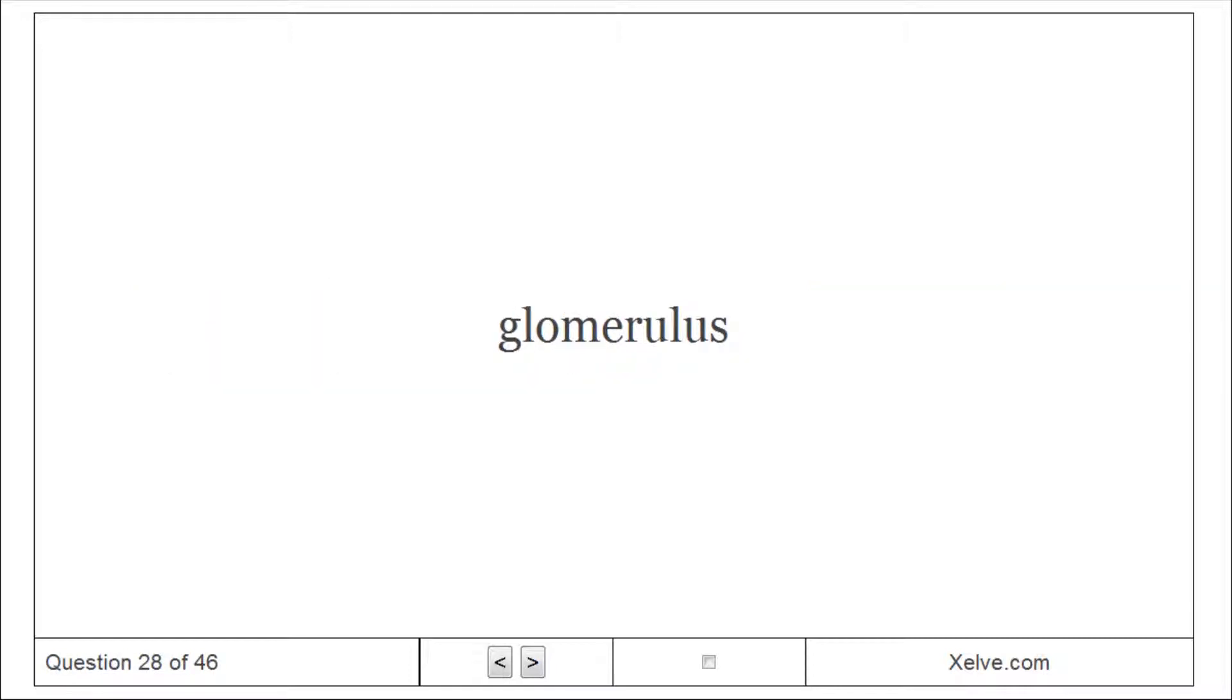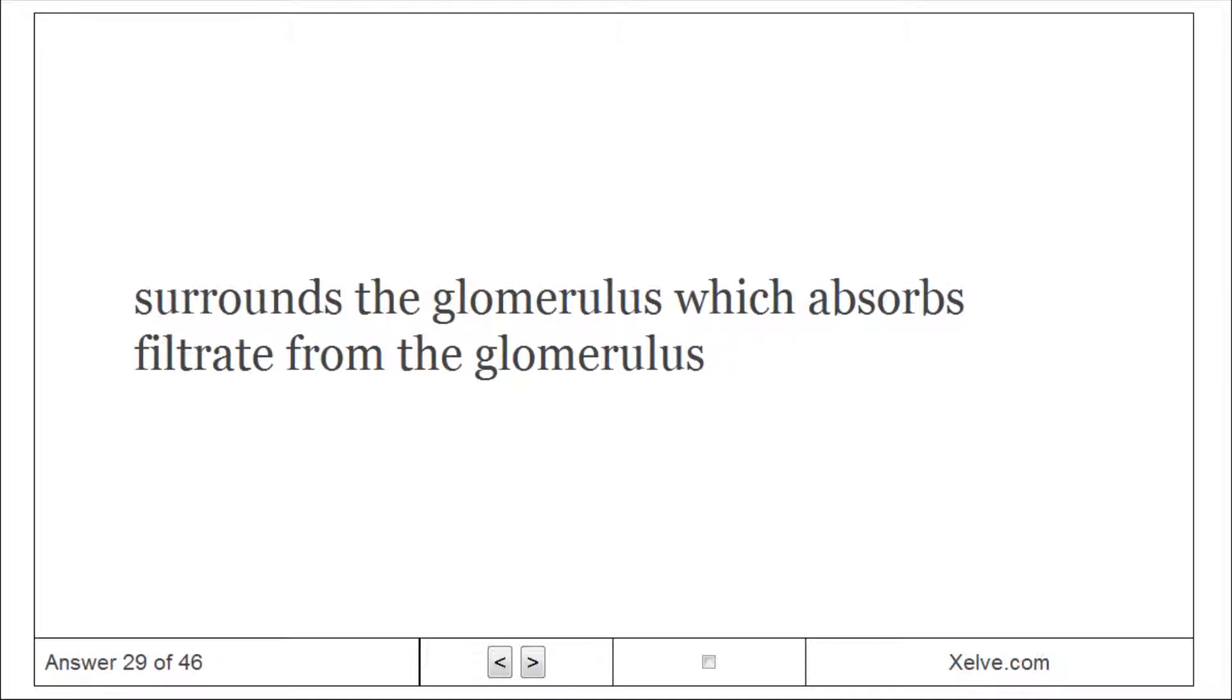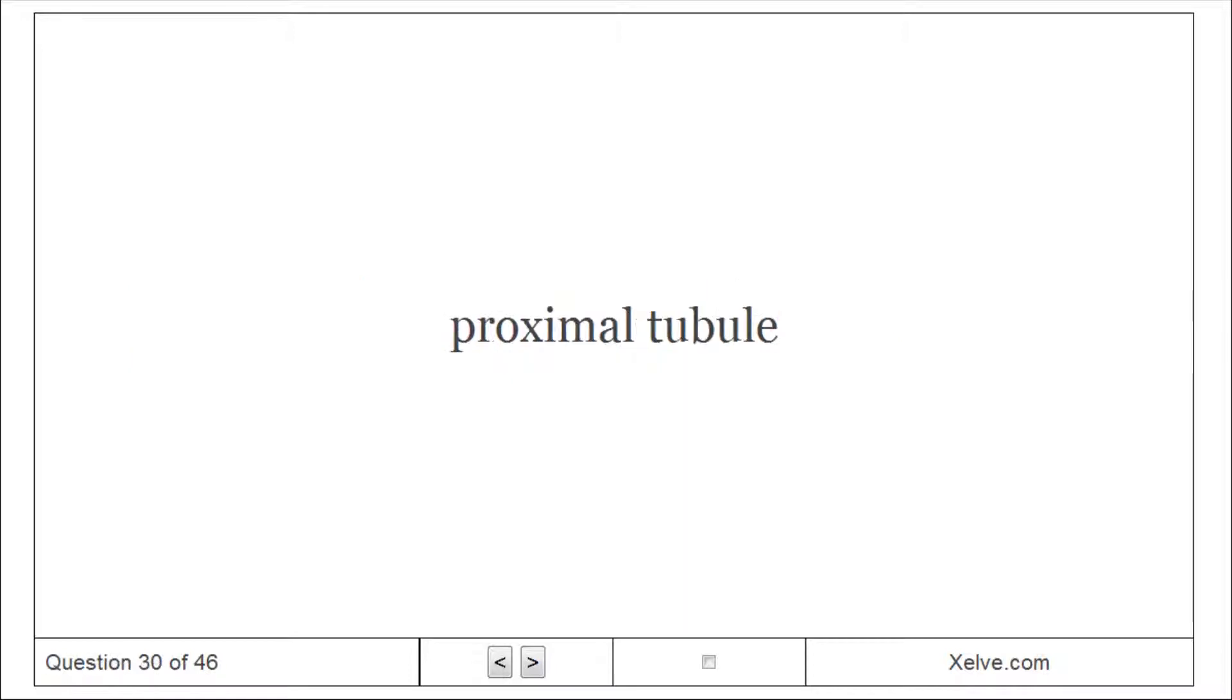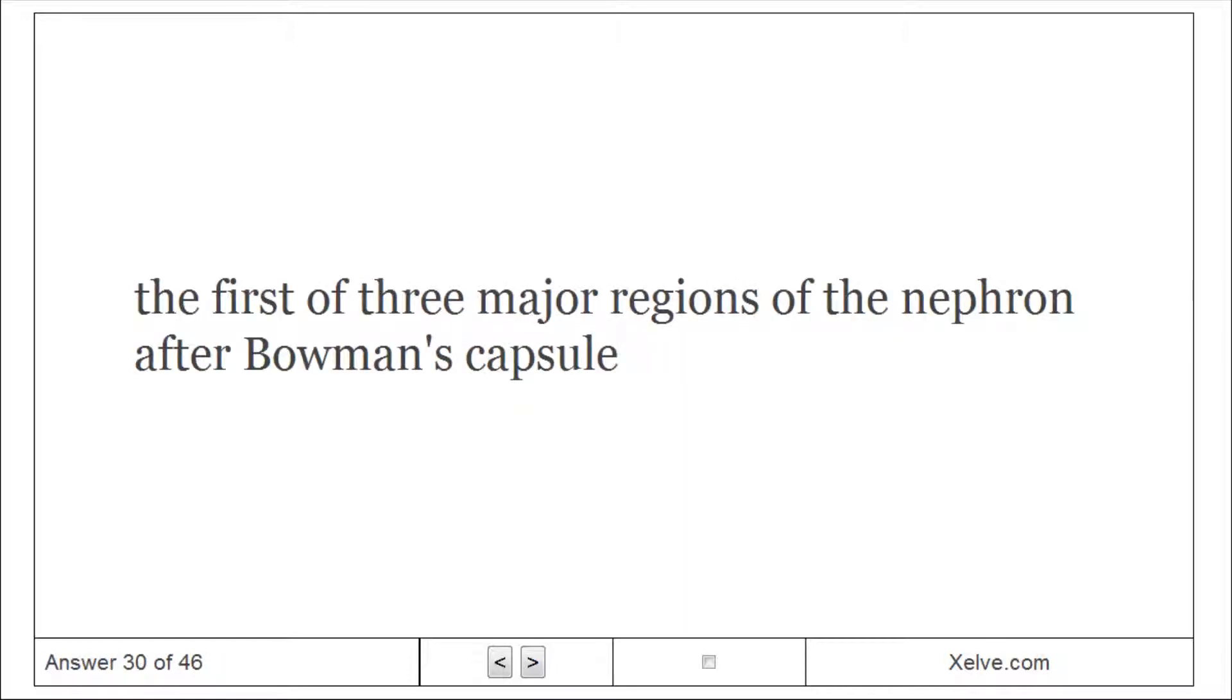Glomerulus: A ball of capillaries. Bowman's capsule: Surrounds the glomerulus which absorbs filtrate from the glomerulus. Proximal tubule: The first of three major regions of the nephron after Bowman's capsule.